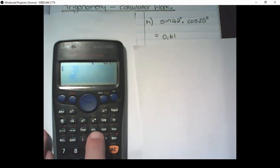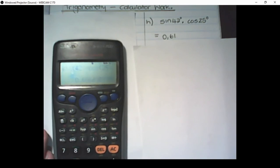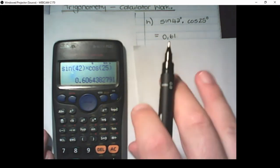So the proper way to put it in is sine of 42. Close the bracket. Multiply with cos of 25. Close the bracket. Now the answer is 0.606. Even though the change is small, it will become significant if the values get bigger.